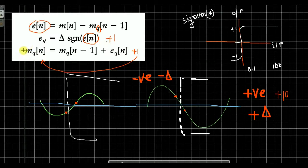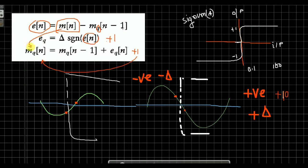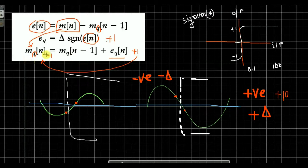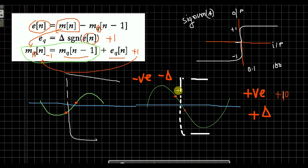That means A is our incoming signal. Incoming signal is compared to a value — Q is used, so a value is quantized. This quantized value is equal to plus 1. So plus 1 is equal to mqn-1, meaning the previous sample value. This means that the difference is a positive value, so the signum function output is positive 1, and mqn-1 will increase.